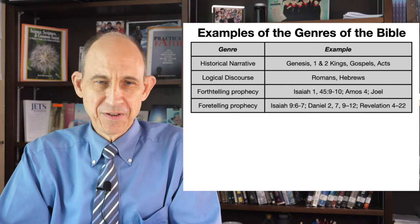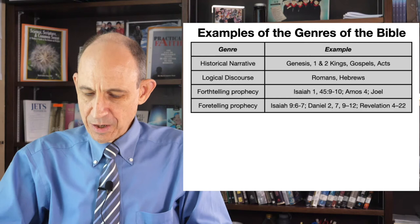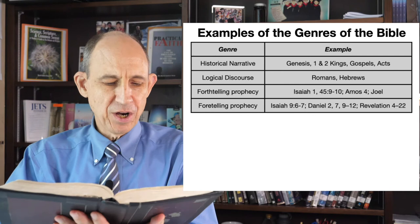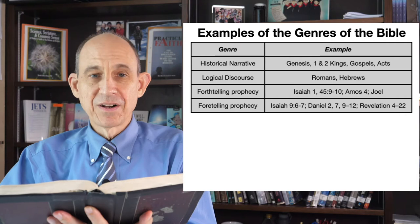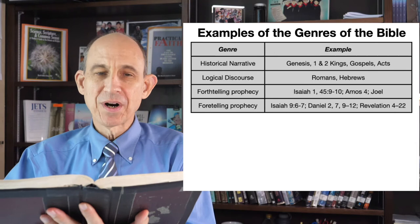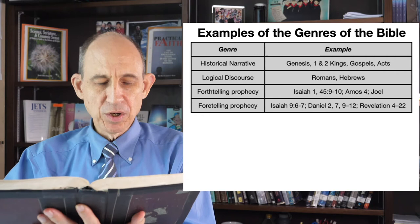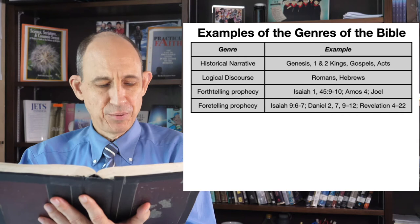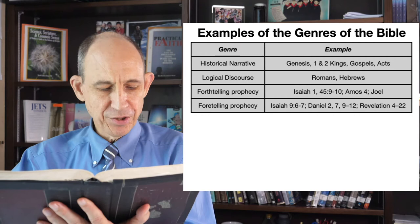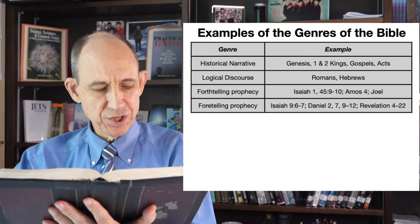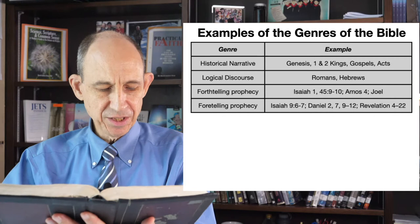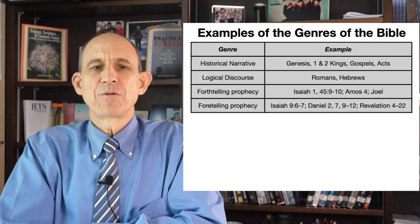The second kind of prophecy is foretelling or predictive prophecy. There's lots of this in the Old Testament as well. Within the book of Isaiah, we have a very well-known passage of predictive prophecy from Isaiah chapter 9, verses 6 to 7: 'For unto us a child is born and a son is given, and the government will be upon his shoulder, and his name will be called Wonderful, Counselor, Mighty God, Everlasting Father, Prince of Peace. Of the increase of his government and peace there will be no end upon the throne of David and over his kingdom... even forever. The zeal of the Lord of hosts will perform this.'